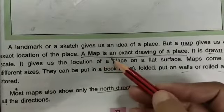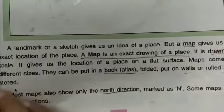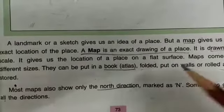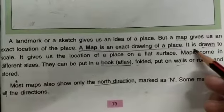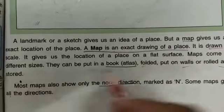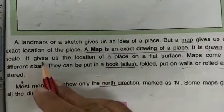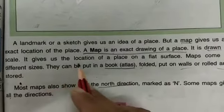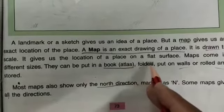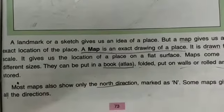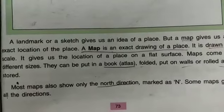A map is an exact drawing of a place. It is drawn to scale, and it gives us the location of a place on a flat surface.